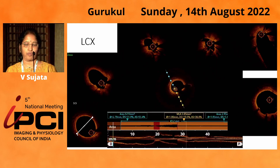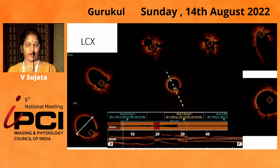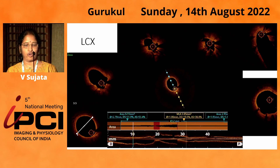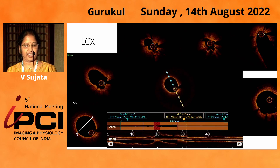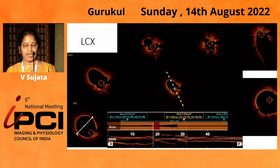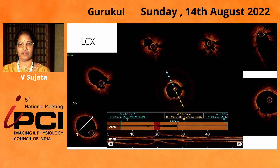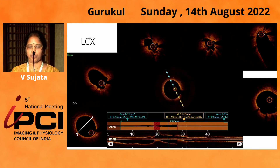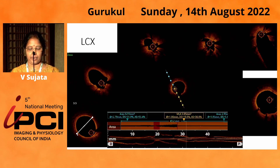We then did a pullback from the circumflex. You can see the distal circumflex is 3.5 mm. As we come proximally, there is a focal stenosis of the circumflex. You can see a crumpled appearance of the circumflex ostium, suggesting struts were across the circumflex — and as Dr. Rowney-Matthew has shown, there can be proliferation and tissue formation on the struts.